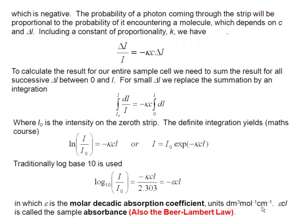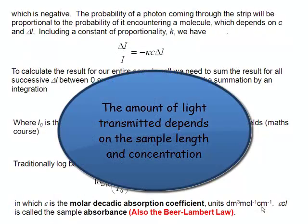So in general, what is the intensity, or the relative light transmitted, going to depend upon? Well, it's going to depend upon whether or not the photon bangs into a molecule as it goes through the sample. If it doesn't bang into a molecule, then it's not going to be absorbed. Therefore, our delta I over I depends on the concentration of the sample.